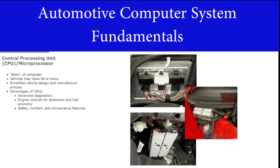Computers contain a central processing unit, abbreviated as CPU and also known as a microprocessor. It is the brain of the computer. Today's vehicles may have 50 or more microprocessors. Microprocessors help to simplify the vehicle design and manufacturing process and make it easier for the automotive technician to service the vehicle. Microprocessors are used on many automotive features, including advanced diagnostics, engine controls to meet emissions and fuel economy standards, safety, comfort, and convenience.